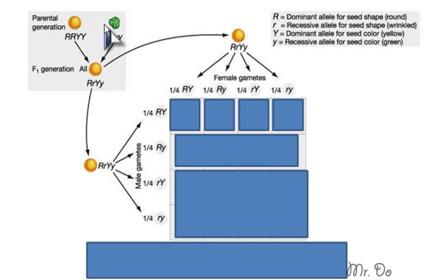When he crossed these two together, this parent can only give a capital R, and this parent can only give a small r. And then this parent can only give a capital Y and a small y. So the first generation is going to be all heterozygous for all traits. Over here it tells you that capital R is round and small r is wrinkled. Capital Y is yellow and small y is green.